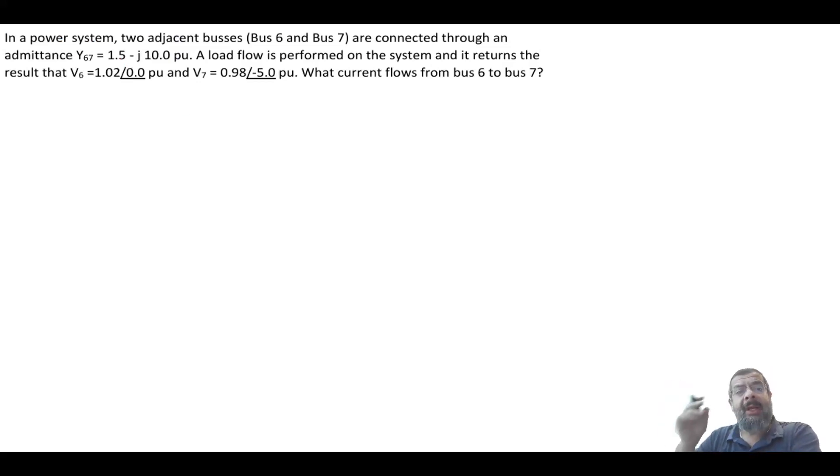So let's see the first question here. In a power system, there are two adjacent buses, bus 6 and bus 7. So this is bus number 6 and bus number 7. And they are connected through an admittance. So in between them, there is an admittance connected Y equal to 1.5 minus j10. The load flow is performed and it returns, this is what I just mentioned. And in the power flow, it gives you the voltage and the angle. Everything is per unit. What current flows from 6 to 7 bus?